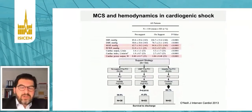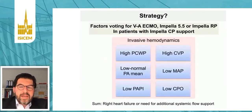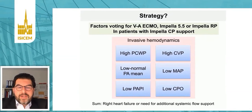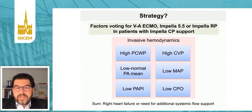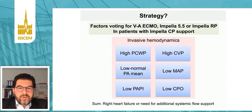PA catheter data is not only important for adjusting device settings or medical therapy — it's also important for the whole strategy. For example, in patients with AMI and Impella CP support: do I need additional VA ECMO, do I need to upgrade to ECMELLA, do I need a stronger Impella pump, do I need right ventricular support? A high capillary wedge pressure on support, a high CVP, a low PAPI indicating RV failure, a low CPO — these are all indicators which, together, help you make wise decisions for patients on support.